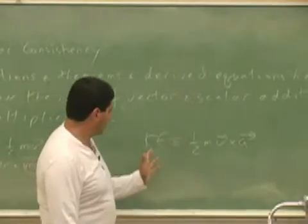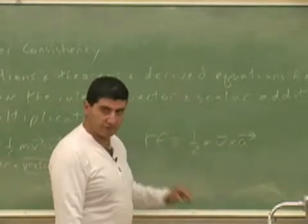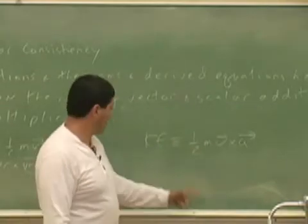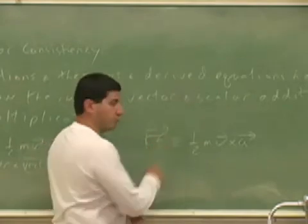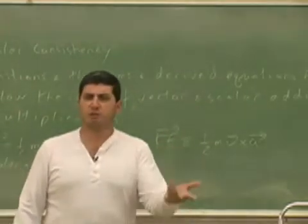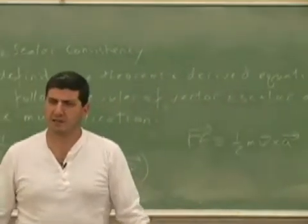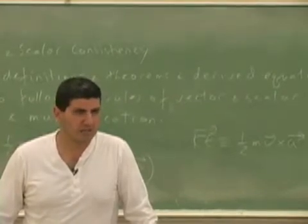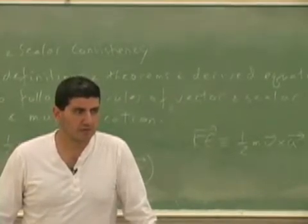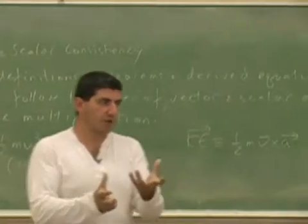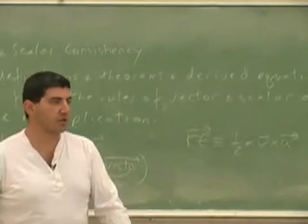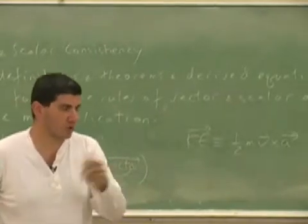No, because a vector crossed with a vector is a vector. The cross product gives a vector. Therefore, kinetic energy would be forced to be a vector. Then we'd have to ask: is energy a vector? Does it have direction? It doesn't make sense for energy to have a vector. If energy is just a quantity of how much energy you have, then you can't have direction to it.